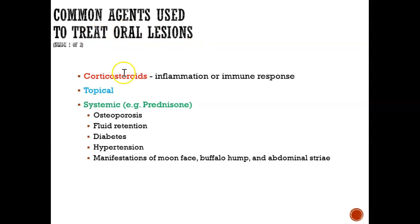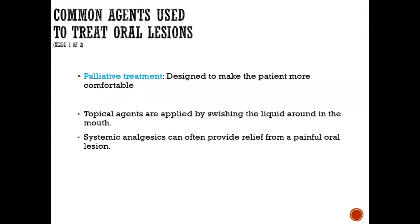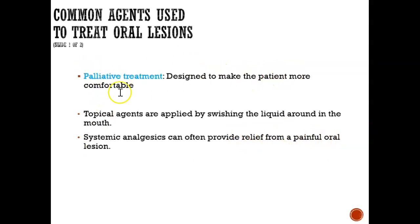When people have oral lesions, we typically treat with corticosteroids, especially if there's inflammation or an immune response. The medication could be topical — a cream applied on top of the lesion — or systemic, like prednisone, where they're swallowing it. It's important to offer palliative treatment that makes the client feel more comfortable, whether through topical agents, chlorhexidine rinse to help eliminate inflammation and pain, or analgesics — systemic medication they swallow to provide relief from the painful oral lesion.